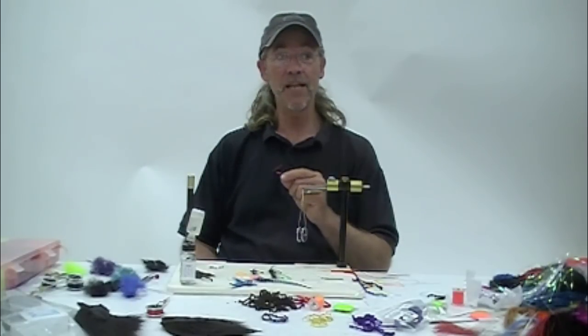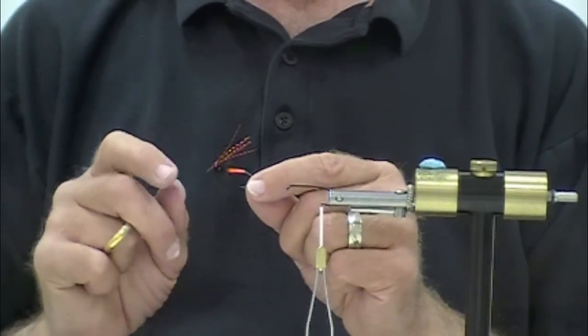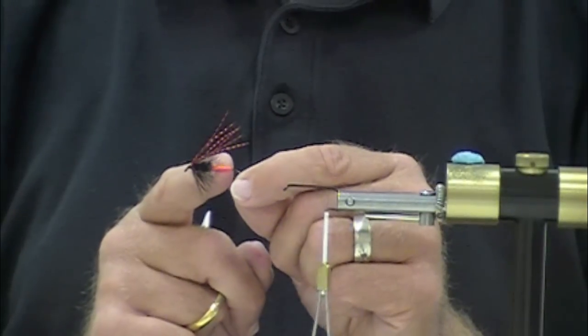This is the Laggerton Mini Flat Braid Series. We're going to tie four flies, one video of each. No tail. Laggerton Mini Flat Braid. Did you hear that?